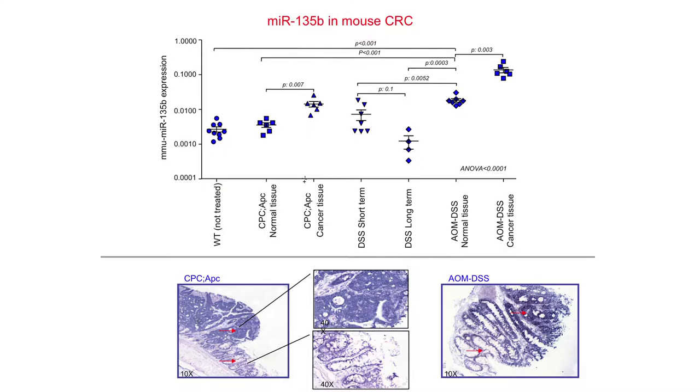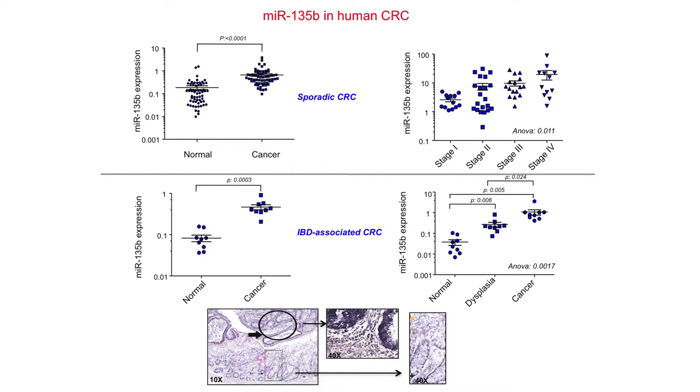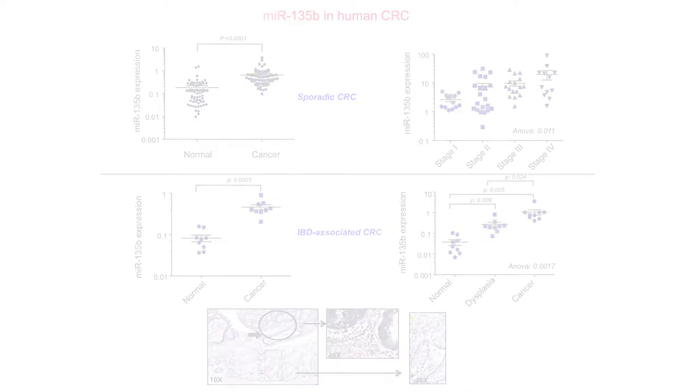We were also able to validate our finding by in situ hybridization for MIR-135b in tissues and tumors from mice. We then moved to patients. We analyzed sporadic colorectal cancer and defined an upregulation of about four-fold change in cancer compared to normal tissues. More importantly, we established a correlation between MIR-135b overexpression and stage of colorectal cancer. The same findings were observed in inflammatory bowel disease-associated cancer, and the dysplastic area nearby the cancer already showed upregulated MIR-135b, suggesting it is an early event in colon carcinogenesis.